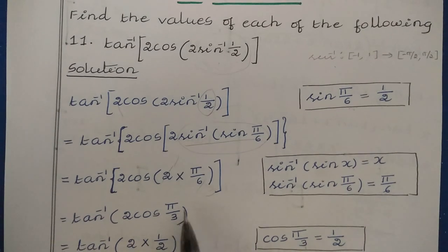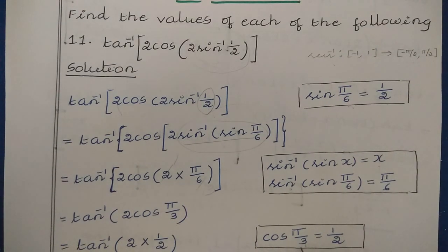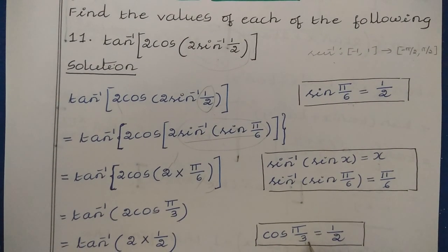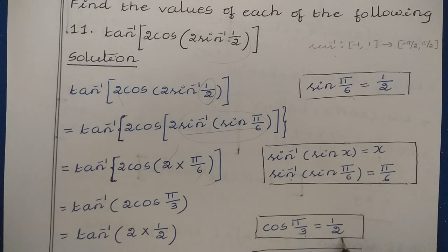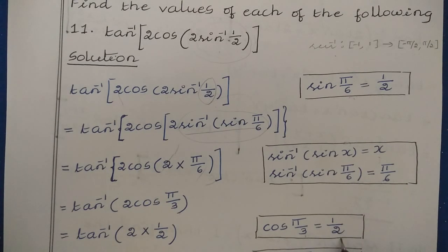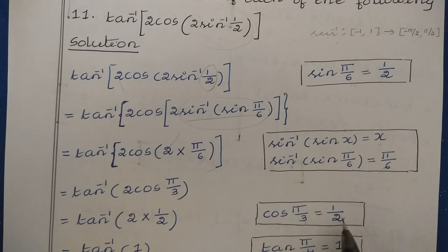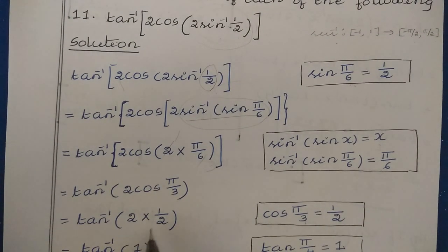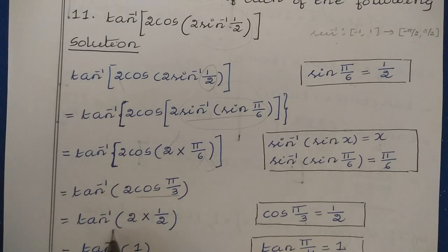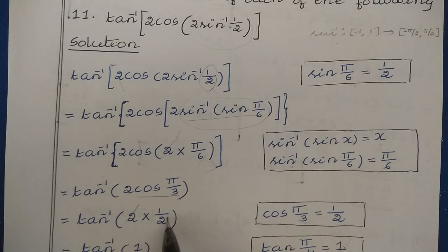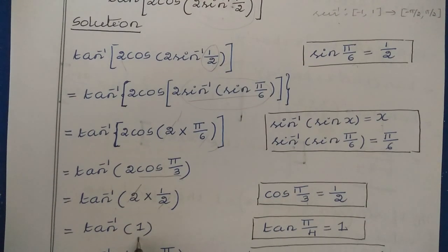cos(π/3) is cos 60°, which equals 1/2 from the trigonometric table. Substituting, we get tan⁻¹(2 × 1/2). The 2s cancel, giving us tan⁻¹(1).